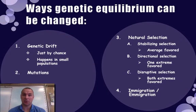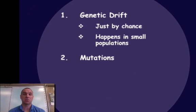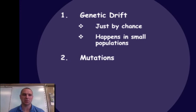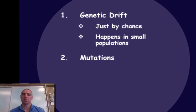There are four ways genetic equilibrium can change. The first one is genetic drift. Genetic drift is just by chance, and it's going to happen in very small populations. Think of a mud puddle that might have microorganisms and tadpoles living in it. You come along with your four-wheeler and run through it, splash out water, and kill some of those organisms — that's just a chance event. Genetic drift only affects small populations. Something wiping out a small town isn't going to affect the world's gene pool, but it does affect that small town's gene pool.